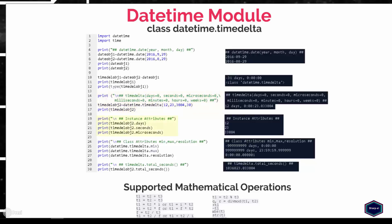The timedelta class also provides three instance variables: days, seconds, and microseconds, as shown in this example. In addition, timedelta class also provides class attributes min, max, and resolution, which describe the maximum range and resolution of timedelta instances. The timedelta class provides only one instance method, total_seconds, which returns the total number of seconds contained in a duration.